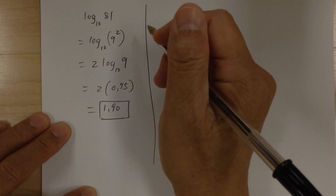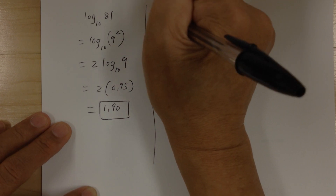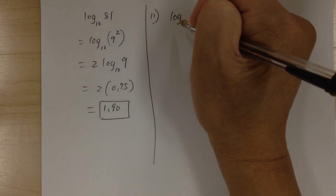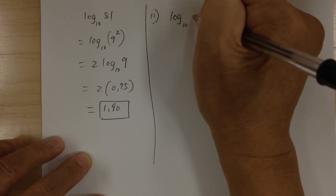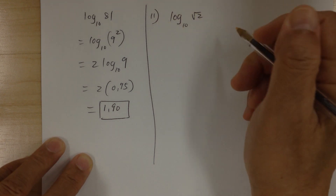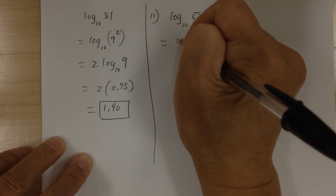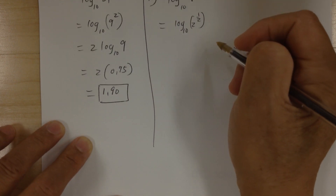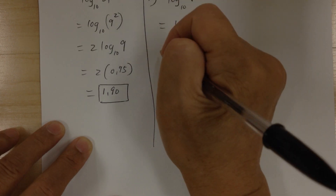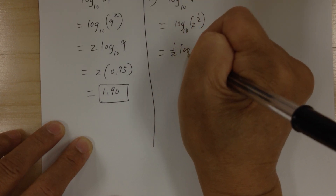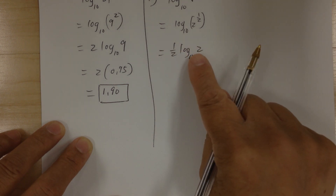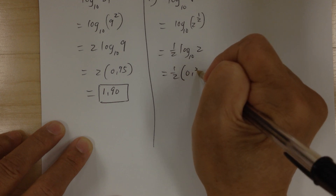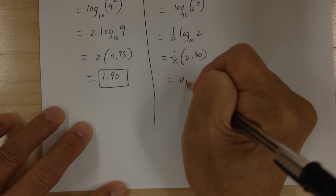Number 11. You have log base 10 of square root of 2. Square root of 2 is equal to 2 to the 1 half power. Then I'm going to move this to the front. Now once I get log 2, I can evaluate: 1 half times 0.30 equals 0.15.